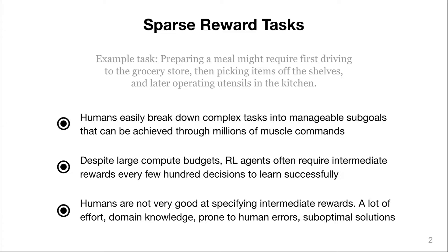And moreover, humans are not very good at specifying these intermediate rewards. It requires a lot of effort and iteration and knowledge about the problem that we actually want the AI to solve automatically. Reward specification is also prone to human errors and can lead to suboptimal solutions if there are intermediate rewards. So how can we move towards learning these really long horizon tasks end to end from sparse rewards?